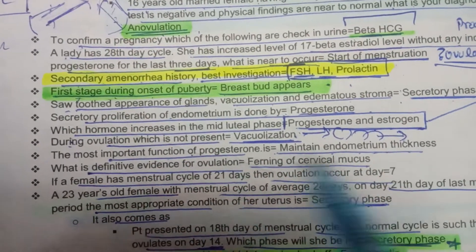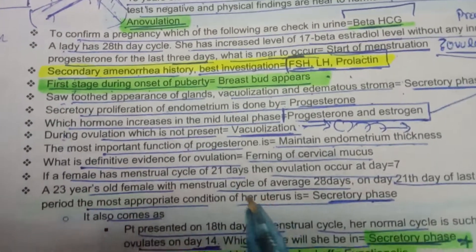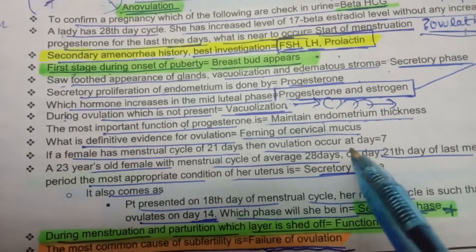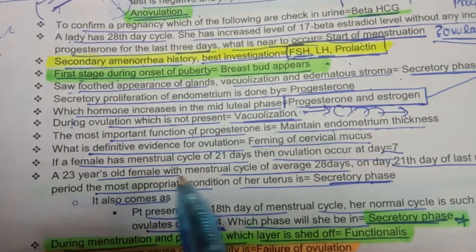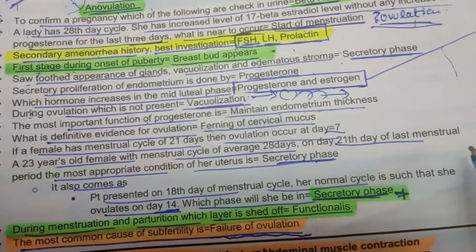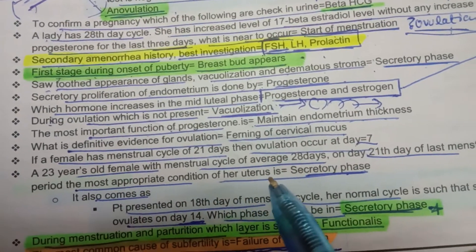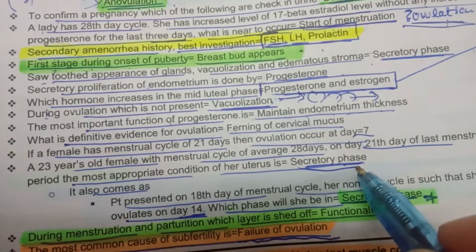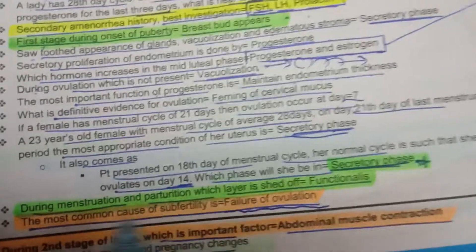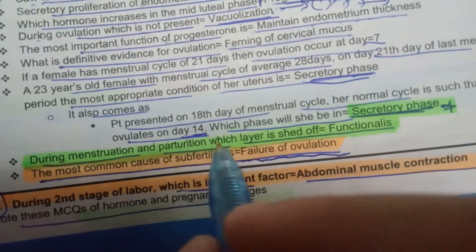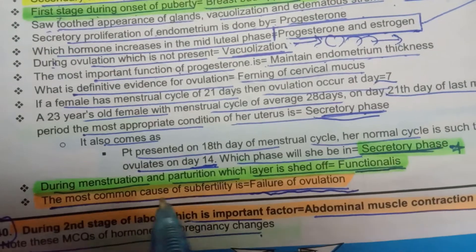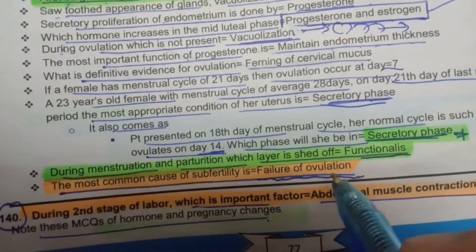The definitive evidence for ovulation is ferning of cervical mucus. In a 21-day cycle, ovulation occurs at day 7. In a 28-day cycle, on day 21 the uterus is in the secretory phase — any presentation in the last 14 days will be in the secretory phase. During menstruation and parturition, the functional layer (functionalis) is shed. The most common cause of subfertility is failure of ovulation — anovulation.